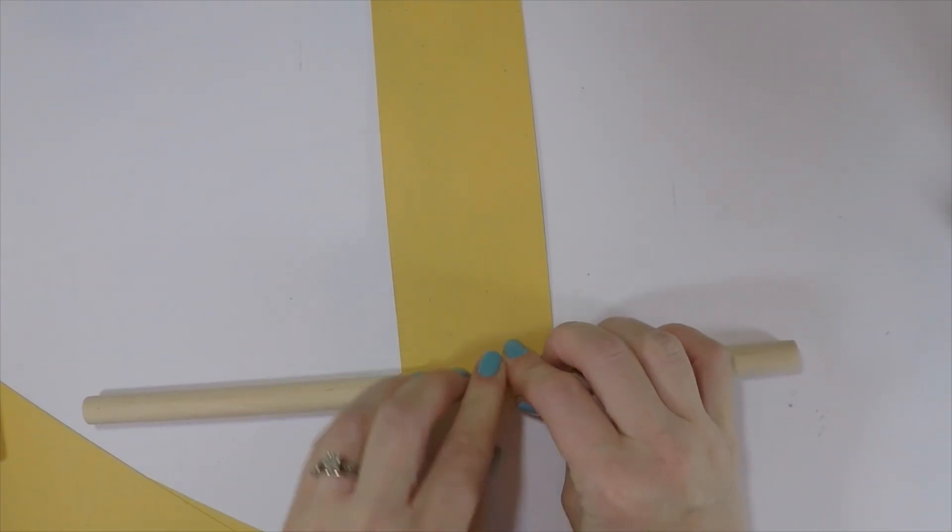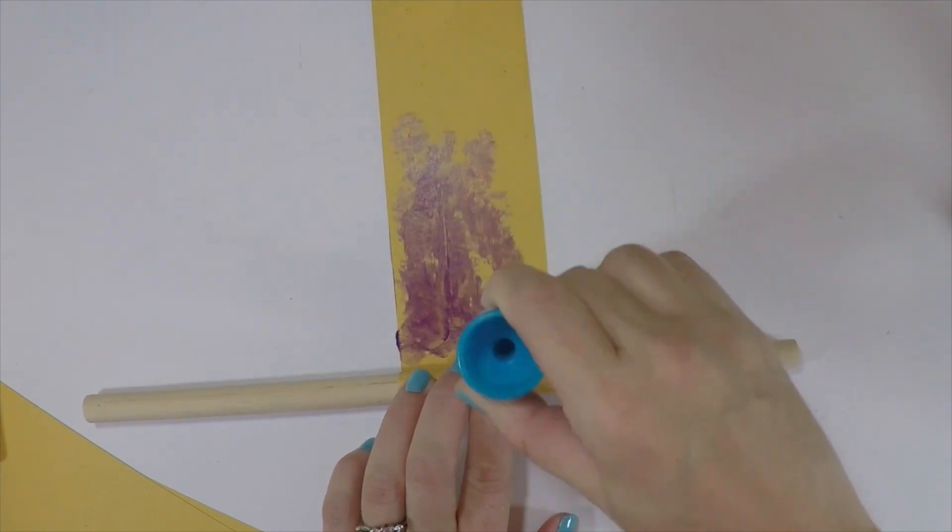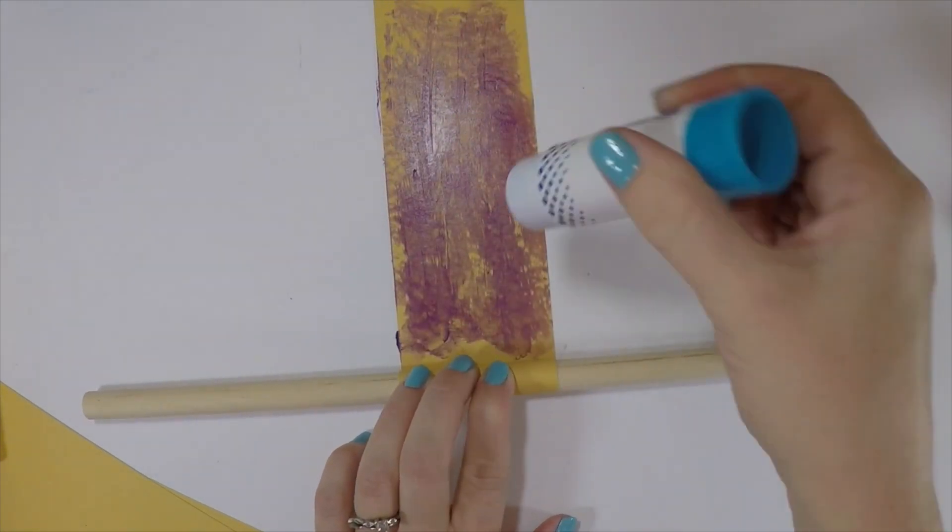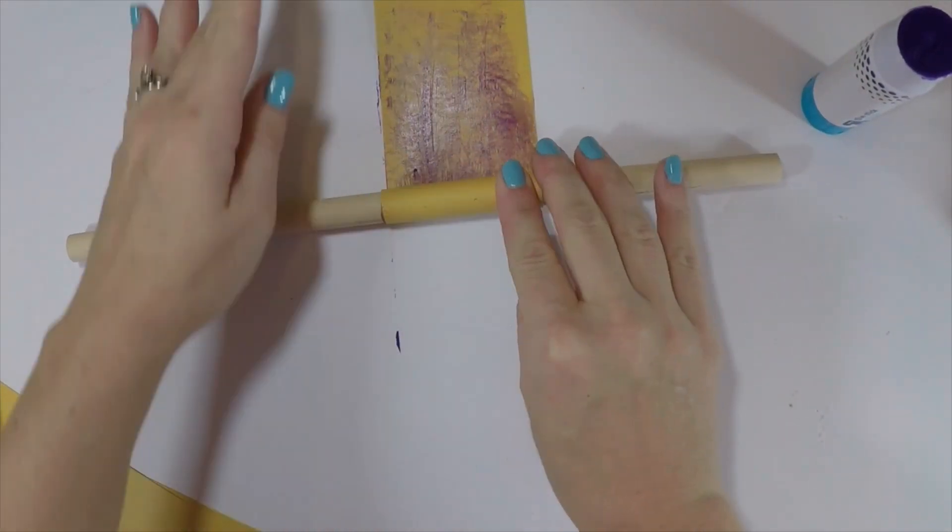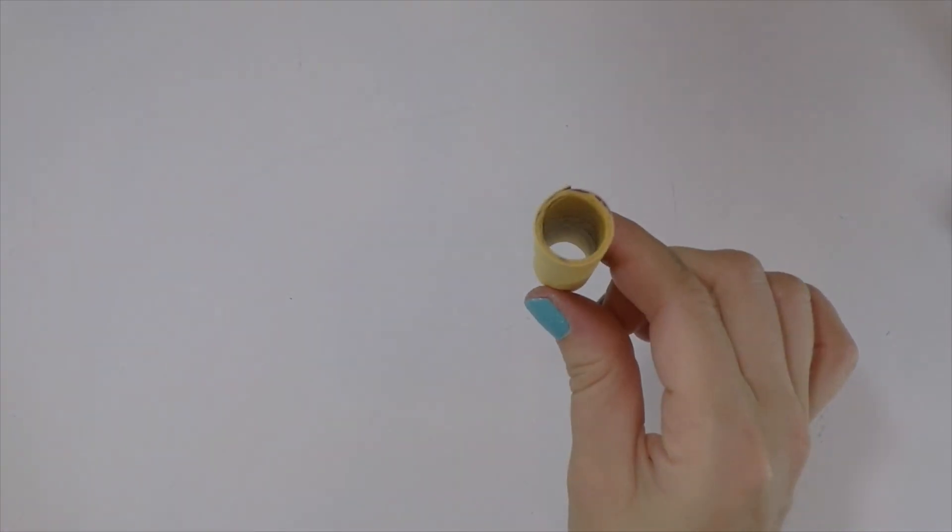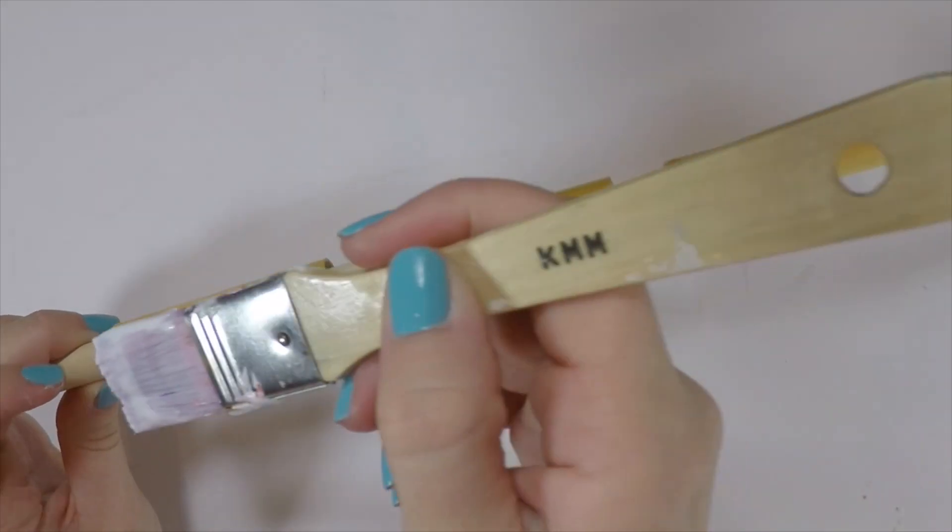Now take your medium wooden dowel and your 2.5 inch gold paper and roll it up on the dowel. This is the same process, just shorter legs. Repeat this 3 times as well. So you should have 3 long legs and 3 short legs.